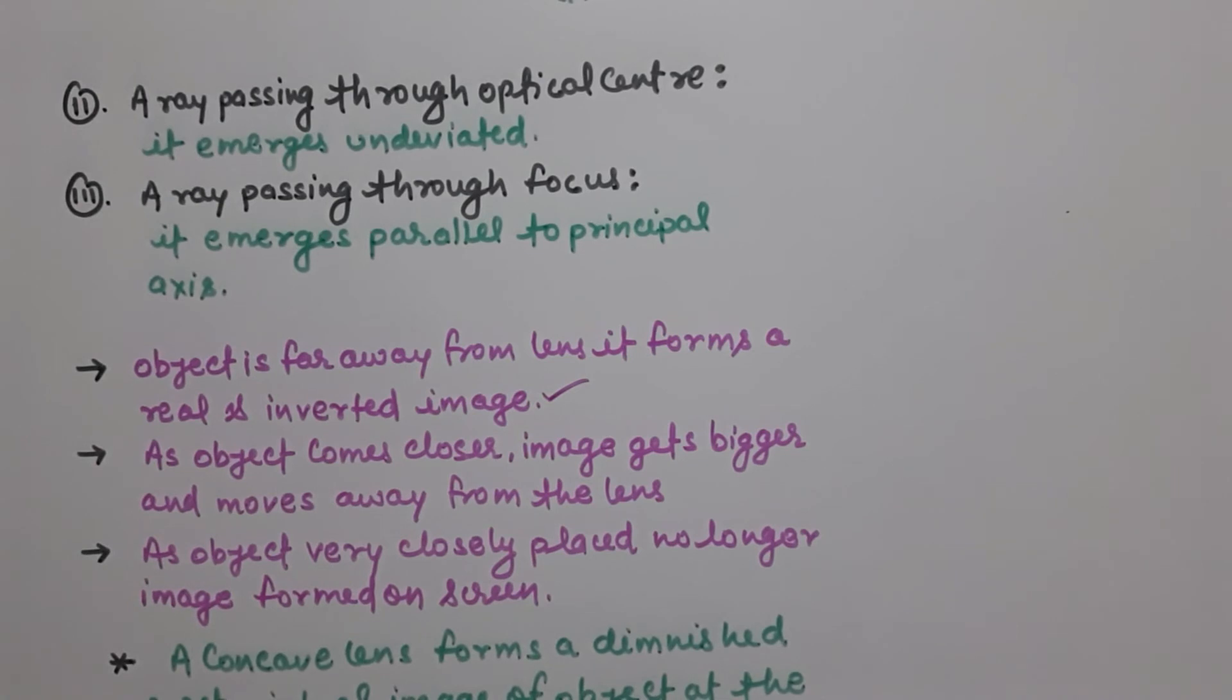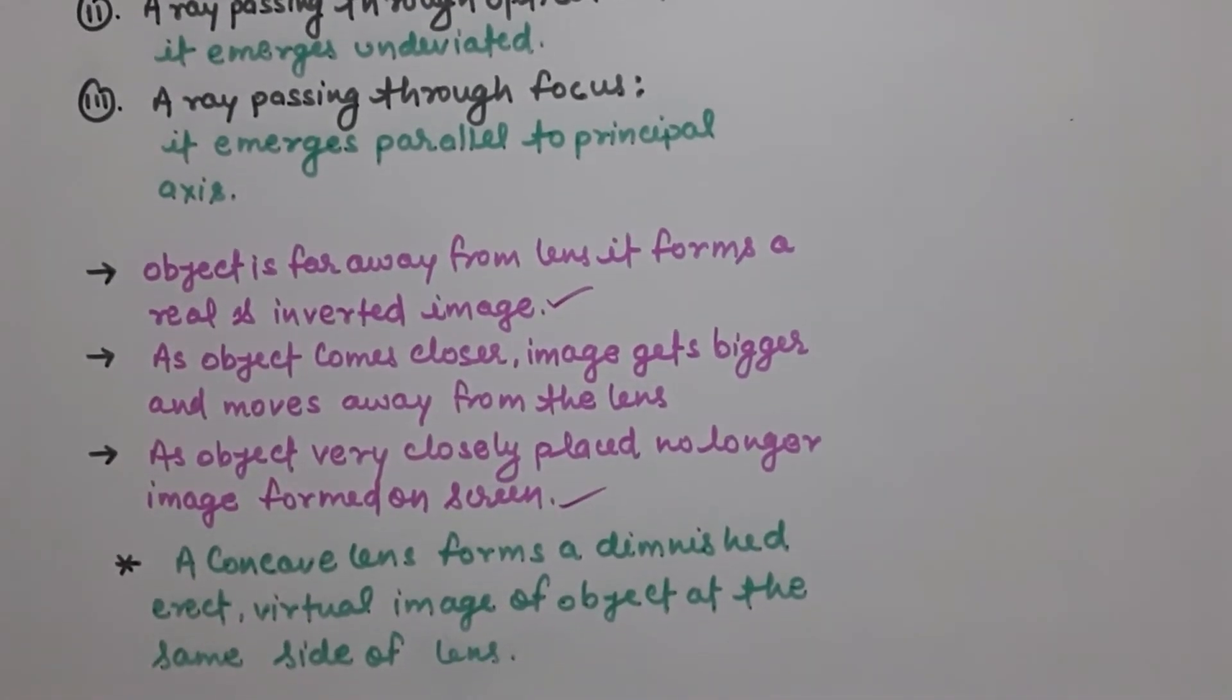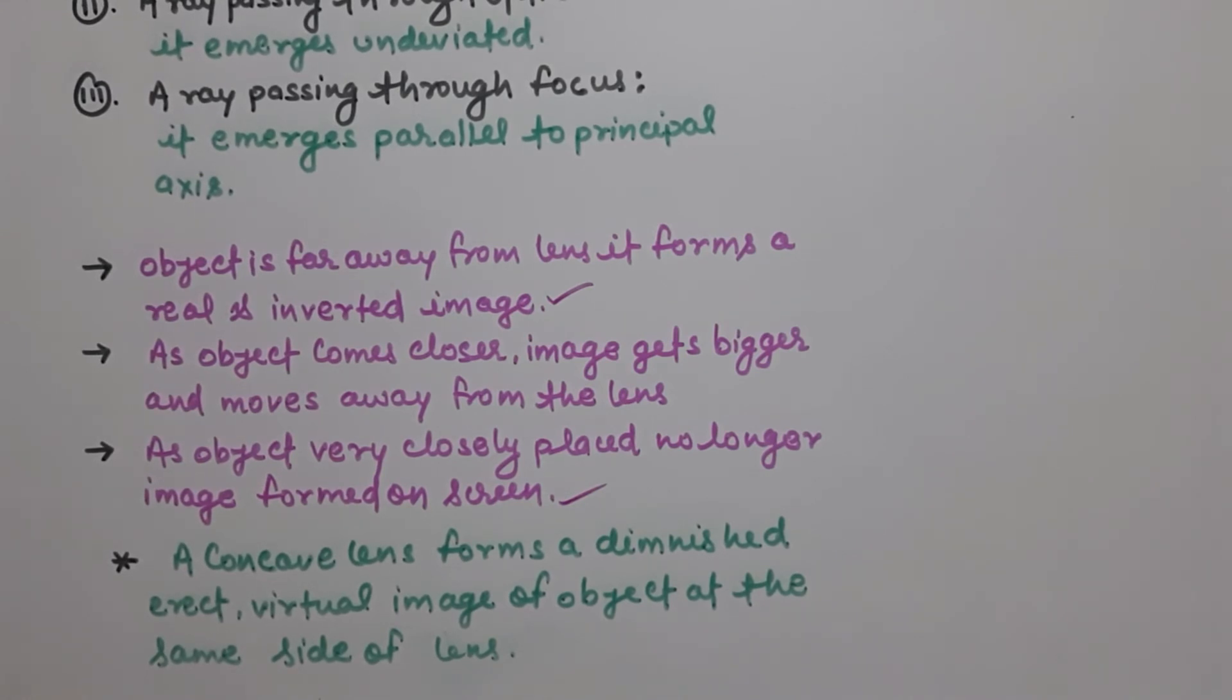But if the object is placed very closely to the lens, no longer image formed on the screen. Now see what will happen in case of a concave lens. It always forms a diminished, erect, virtual image of an object at the same side of the lens. Understand?